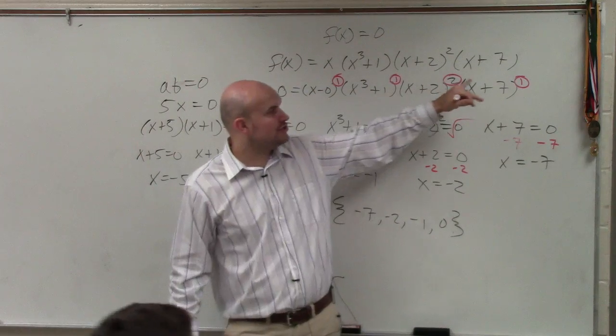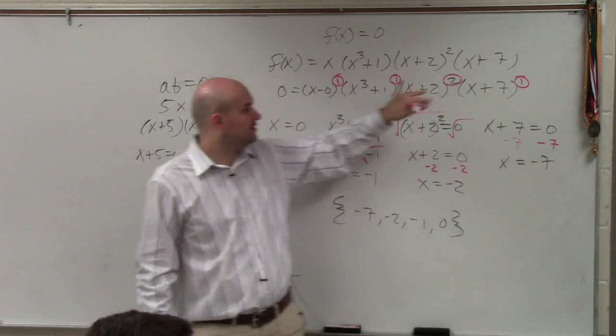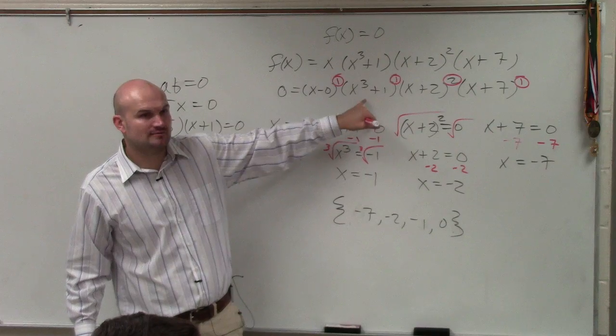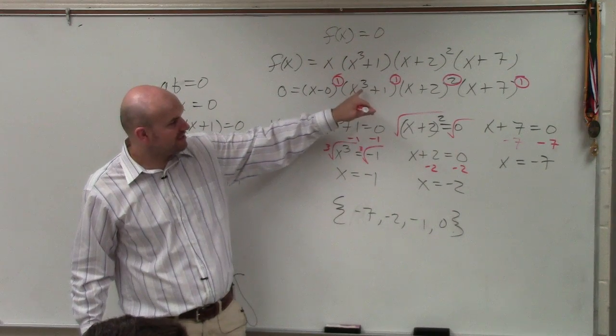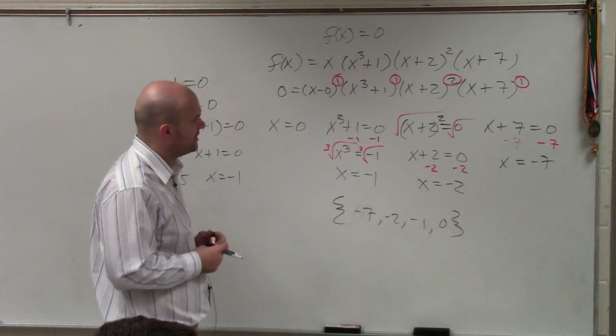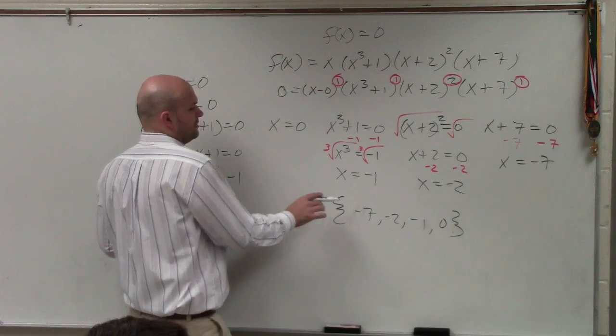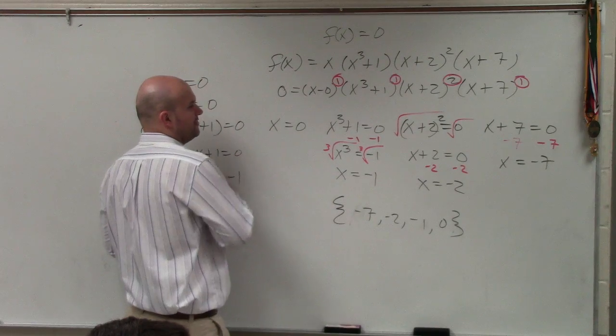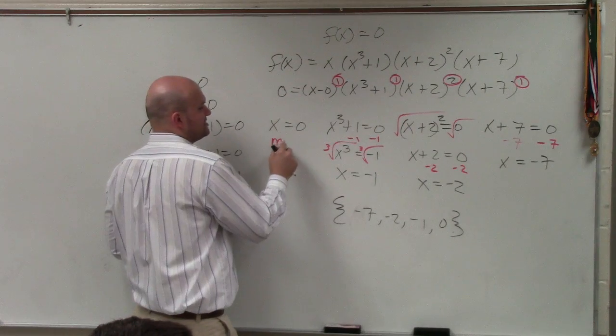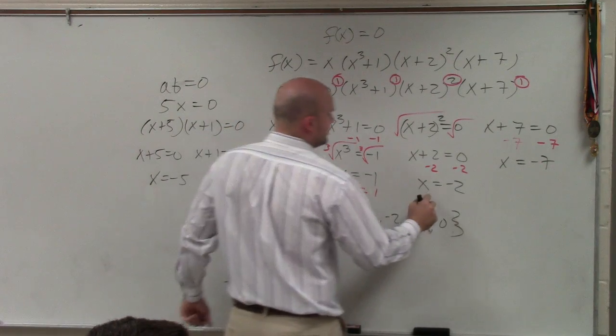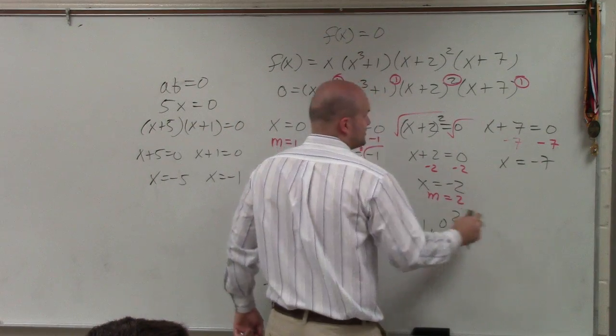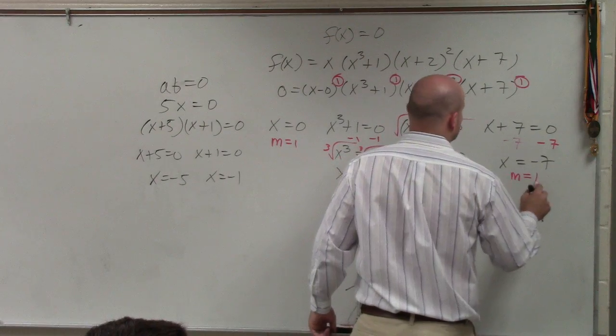1, 1, 2, 1. OK? You could factor this further down. All right? But your factors here are just going to be our negative 1. Now, so this has a multiplicity of 1. Here is a multiplicity of 1. Here is a multiplicity of 2, and here is a multiplicity of 1.